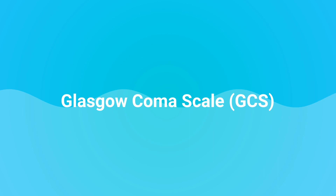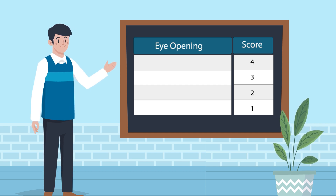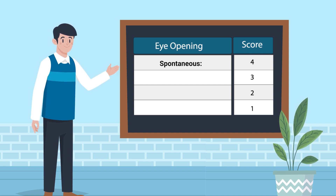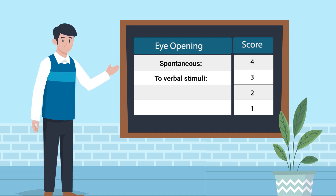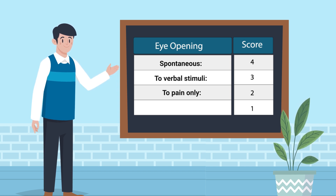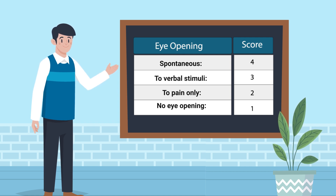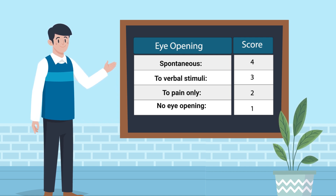Let's take a closer look at each of the individual scoring elements. First, you can observe the patient's eye opening. If their eyes open spontaneously, they get a score of four. If their eyes open only to verbal stimuli, they get a score of three. If they only open in response to painful stimuli, they get a score of two. And if there is no eye opening, they get a score of one.